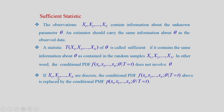In the case of discrete random variables X1, X2, ..., Xn, the conditional PDF above is replaced by the conditional PMF. So the statistic T(X1, X2, ..., Xn) is sufficient if this conditional PMF of the data given T = t does not involve the parameter theta.